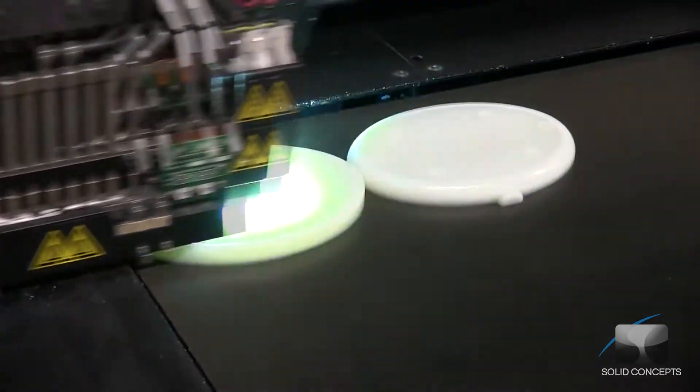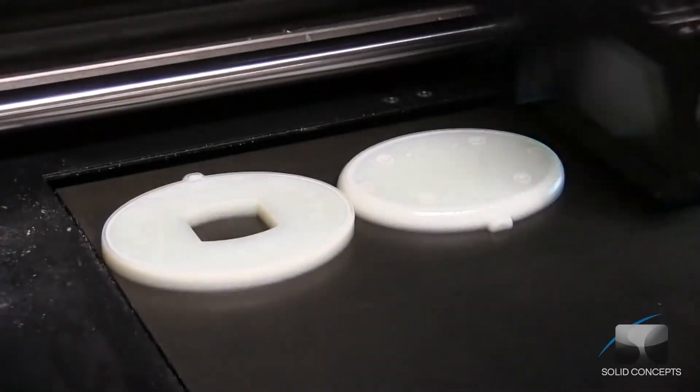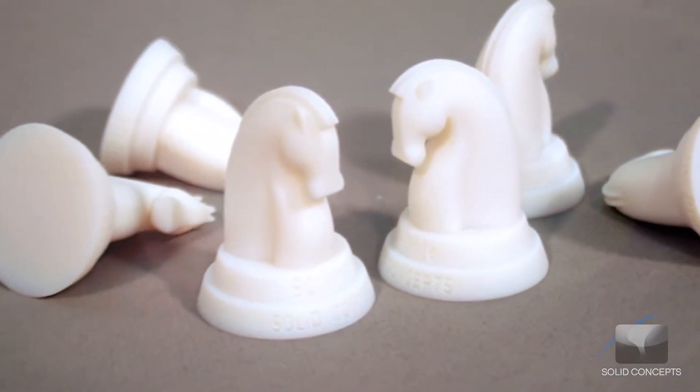PolyJet is one of the fastest prototyping processes available to develop high-precision physical parts and is ideal for smaller parts, appearance models, and master patterns.